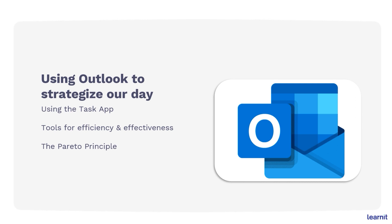For our first part, we'll talk about how to use Outlook to strategize our day. We'll be taking a look at the to-do bar and then the task app. We'll look at different tools that can help us to be efficient and effective. Once we've explored those tools, we'll apply the Pareto principle — a nice concept that helps us prioritize and manage our tasks. Go ahead and pause the video, launch your Outlook desktop client, and come right back. We'll take a look at the to-do bar and start creating some tasks.